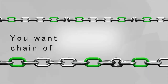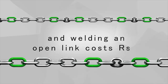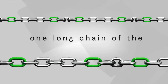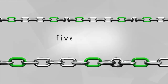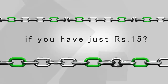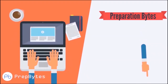You have five pieces of chain, each consisting of three links. You want to make one long chain of these five pieces. Breaking open a link costs one rupee and welding an open link costs three rupees. Is it possible to make one long chain of five pieces if you have just 15 rupees?